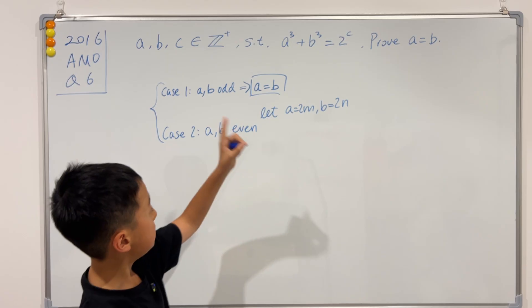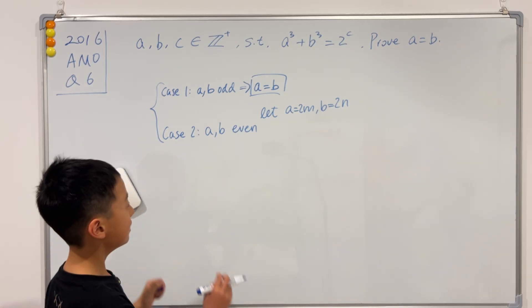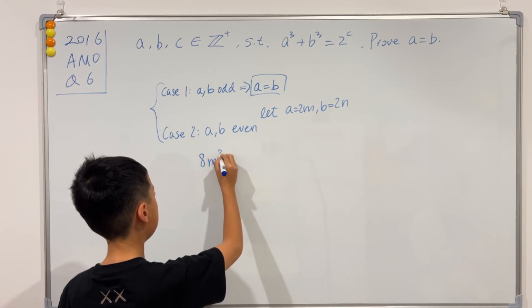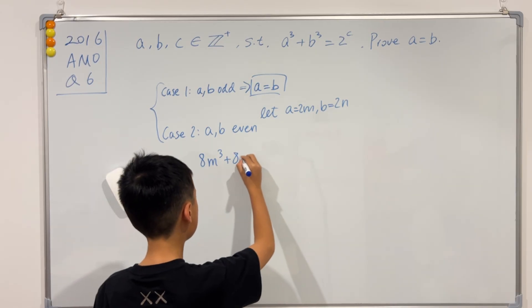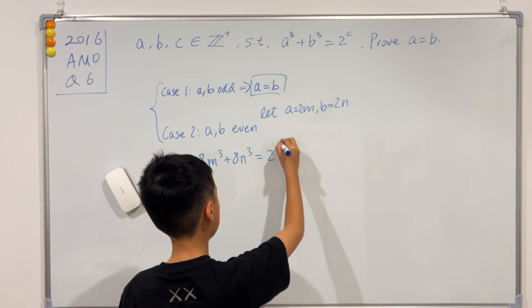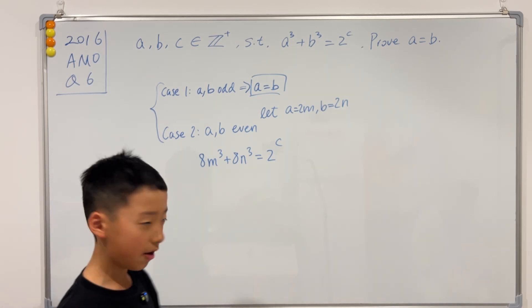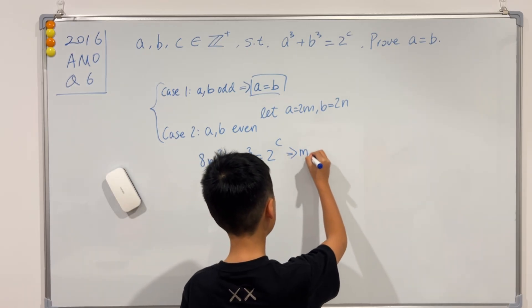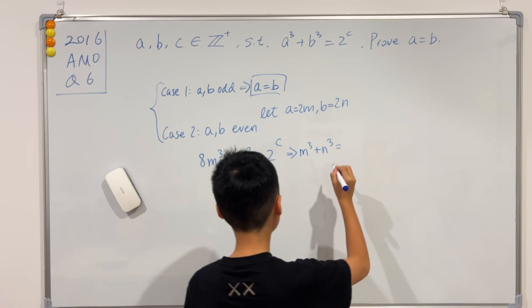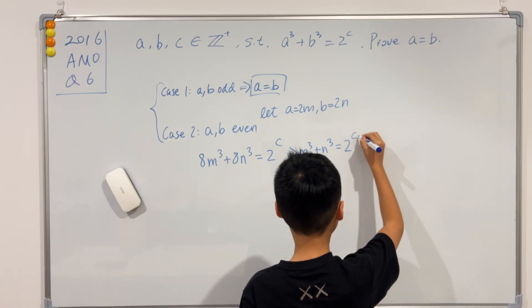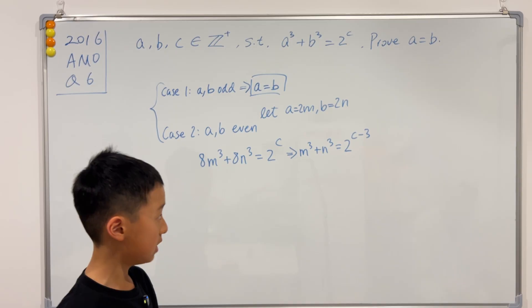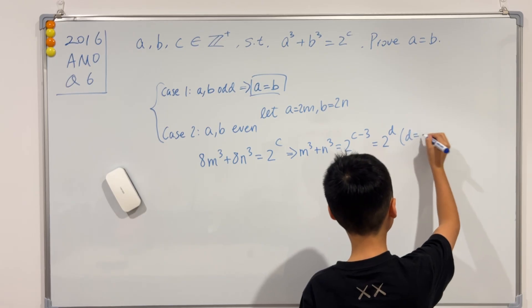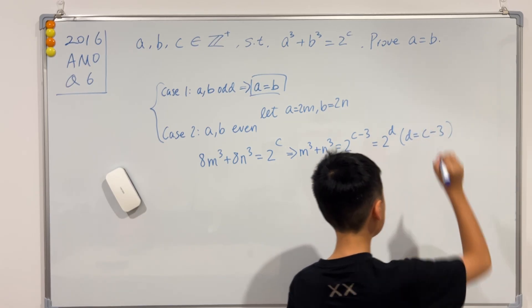So now, if we sub this back into the original equation, then it will become 8m cubed plus 8n cubed equals 2 to the power of c. Now, as long as c is big enough, we can divide both sides by 8. So this becomes m cubed plus n cubed, which equals 2 to the c minus 3, because 8 is 2 to the power of 3. And now, I'm just going to let this equal to 2 to the power of d, where d equals c minus 3.